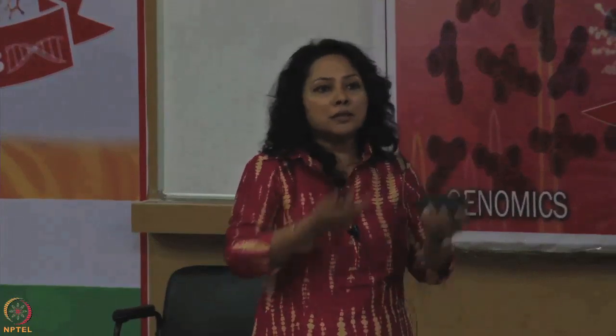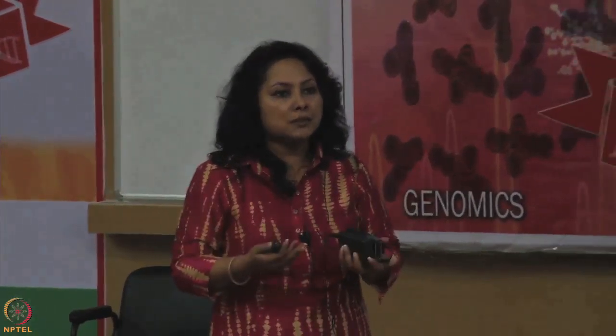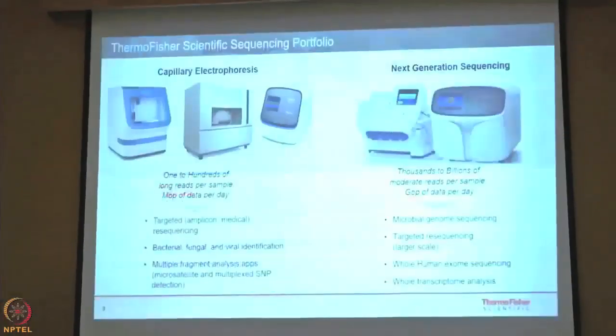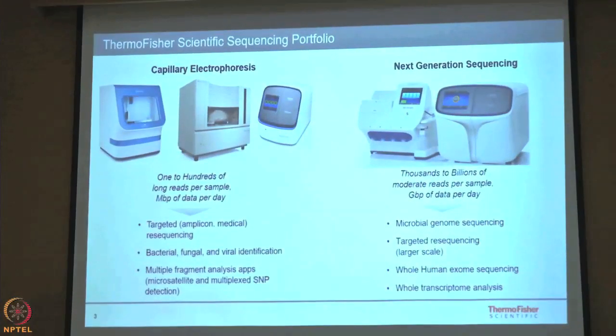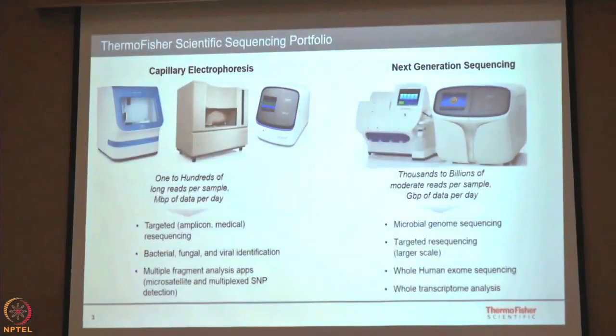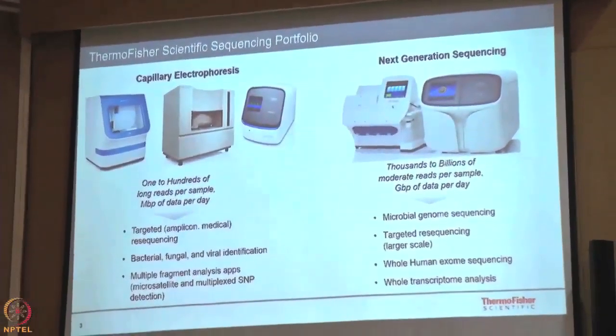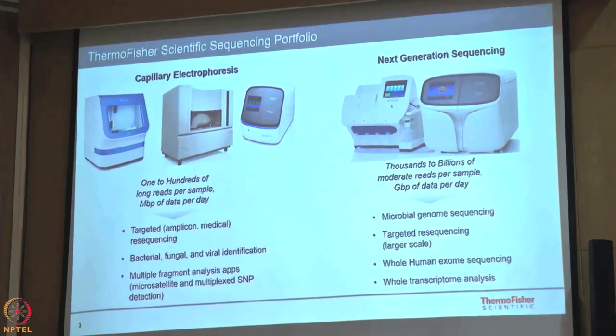Coming from Thermo Fisher, I am very proud that my company has been associated with these sequencing technologies and has been a pioneer in this arena. Our Sanger sequencers use either a 96-well plate or a 384-well plate to generate sequences. We have also come up with advancements where sequences are now cartridge-based, so the user only has to put in a cartridge with their prepared samples and they are good to go.